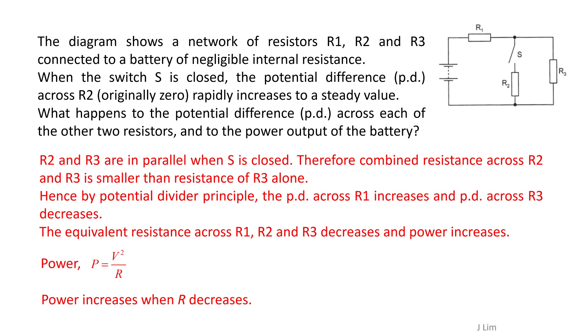Hence, by the potential divider principle, the potential difference across R1 increases and the potential difference across R3 decreases. The equivalent resistance across R1, R2 and R3 decreases and power increases.